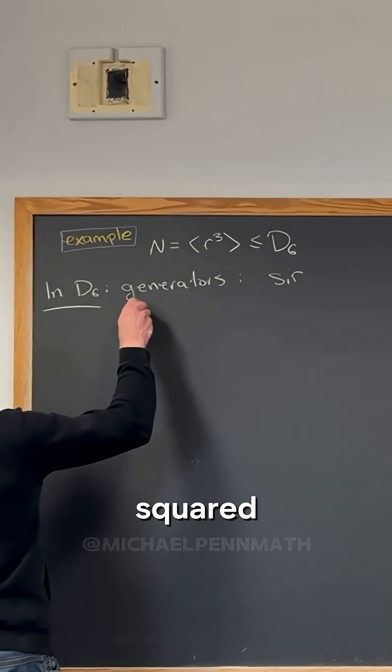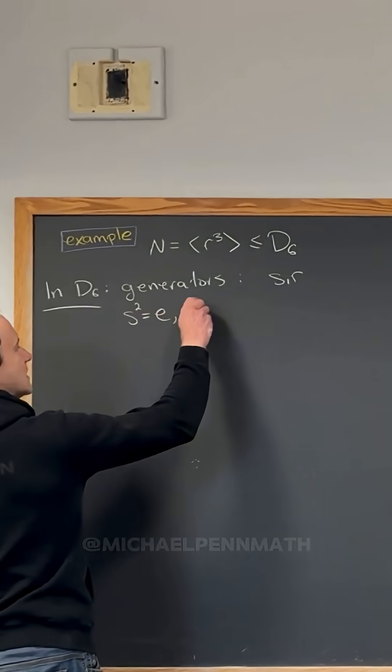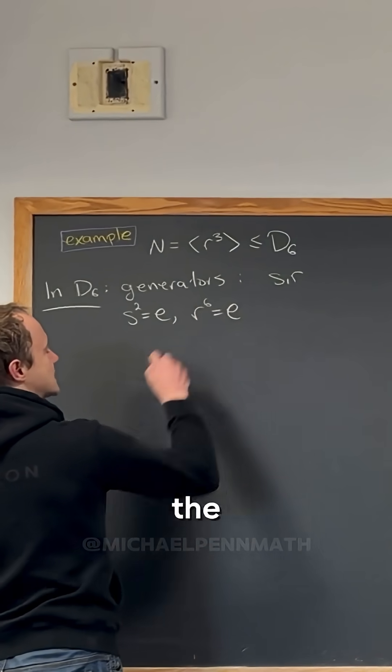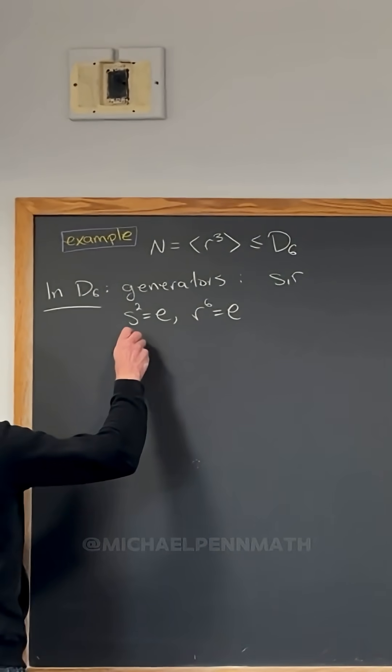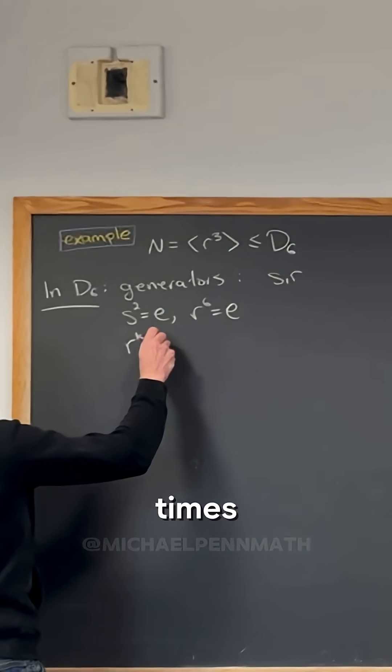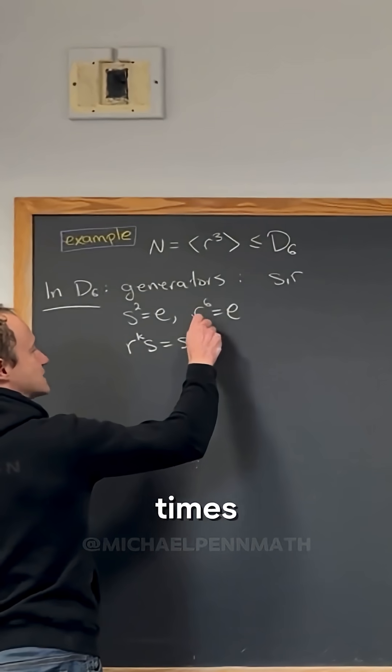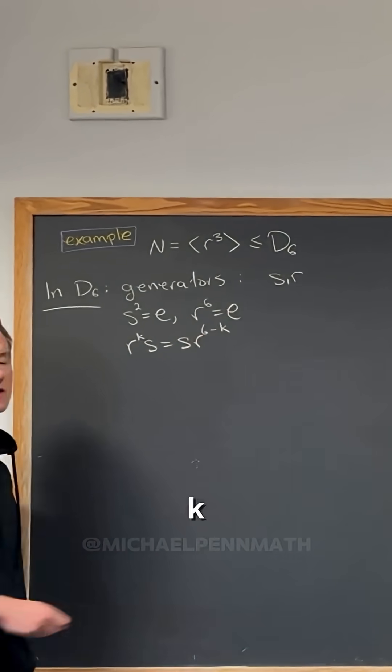And then we know that s squared equals the identity, r to the sixth equals the identity, and r to the k times s equals s times r to the sixth minus k, right?